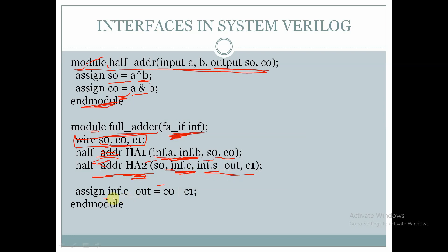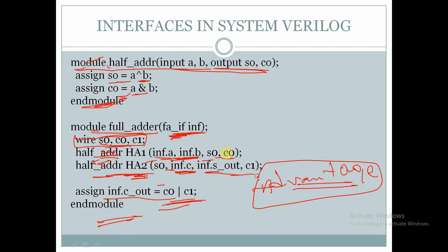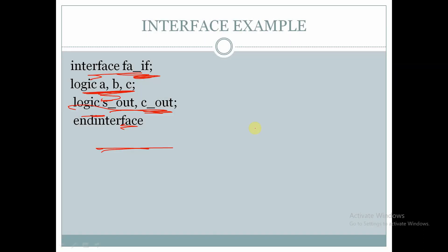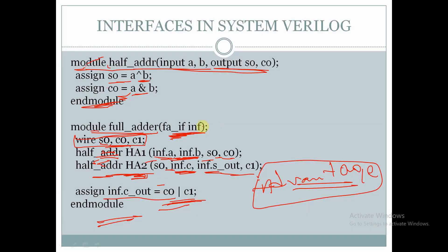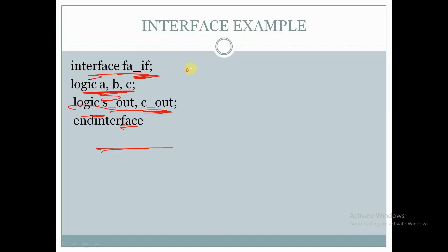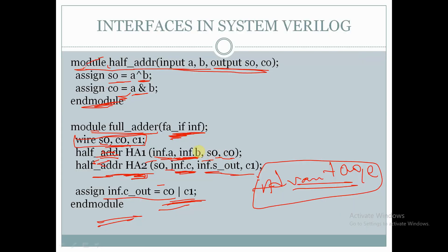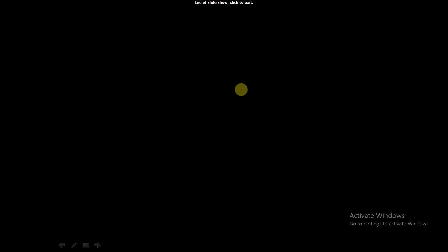We assign inf.c_out which is equal to c0 OR c1 and here we are ending the module. So this is the advantage of the interface: there is no need to declare all the signals separately in the full adder module like in the previous example. Instead of declaring all the signals in the full adder module, we can declare an interface and use the signals by means of this interface. This is all about interfaces in SystemVerilog. Thank you for watching this video.